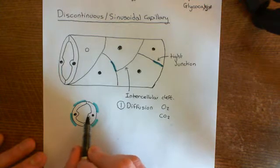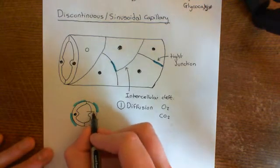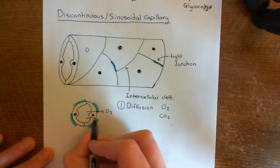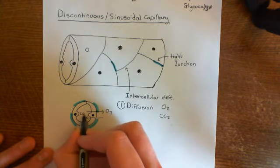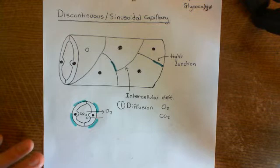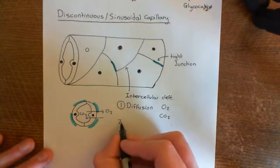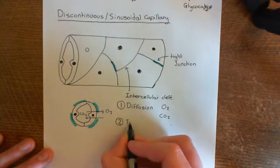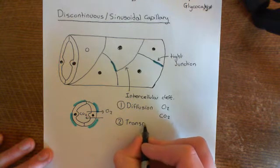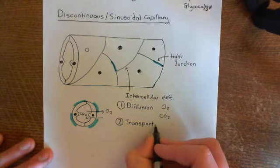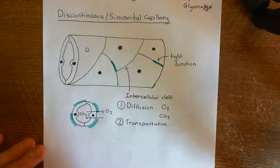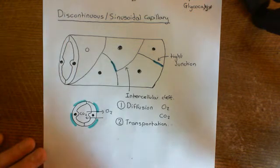So oxygen will come out of the blood because there's a concentration gradient favouring its movement out, and carbon dioxide will go into the blood because there's a concentration gradient favouring the movement of CO2 in. The second mechanism is an actual transport mechanism — certain things can be actively transported across the endothelial cells, and glucose is often transported across endothelial cells.